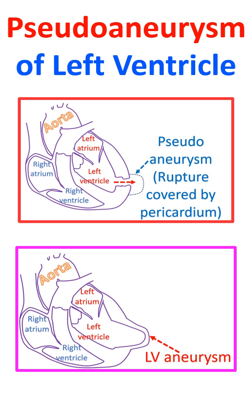Pseudoaneurysm has a high chance of secondary rupture and needs urgent surgical intervention, while a true aneurysm is unlikely to do so. Rupture of a pseudoaneurysm leads to cardiac tamponade, shock, and death if urgent surgical intervention is not feasible.